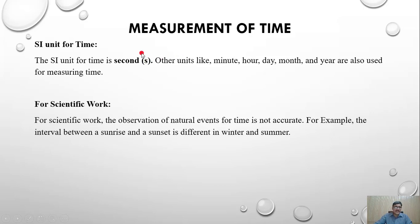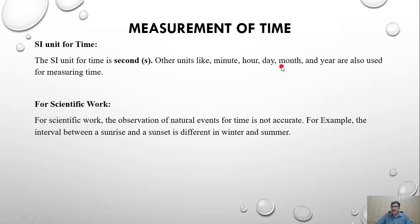Now we will see the SI unit for time. The SI unit for time is second, but there are other units also like minute, hour, day, month, and year. In the previous slides we saw how in old days people used natural events to measure time in years, months, days, and hours.